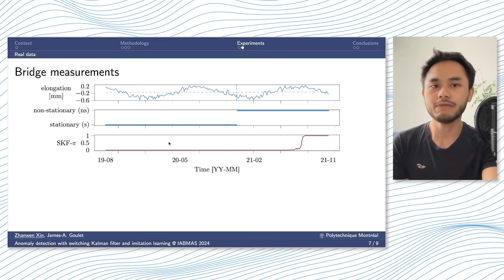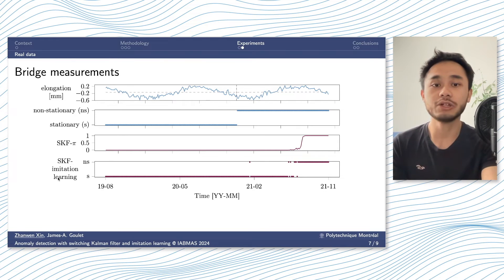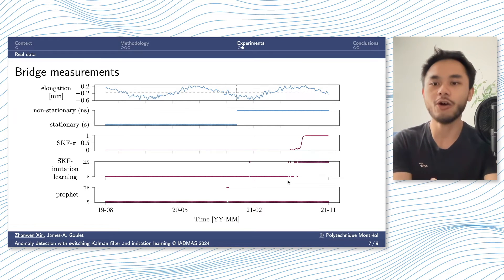By using switching Kalman filter, it can capture the region switch almost at the end of the time series. And by using imitation learning, it can detect it much earlier, almost at the beginning when the anomaly is developing. And it gives more alarms from here. For this time series, I also test with another model called Prophet, proposed by Meta. And this model triggers an alarm before I introduce the anomaly. So this is a false alarm.